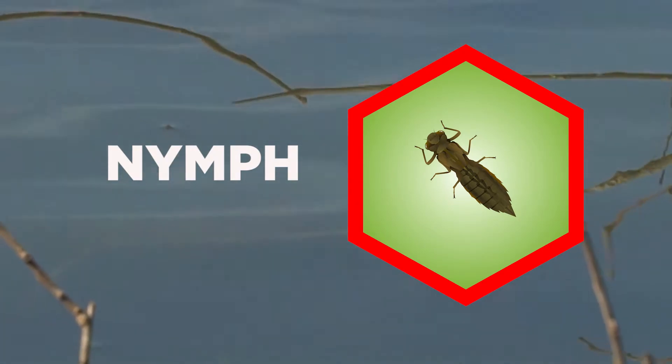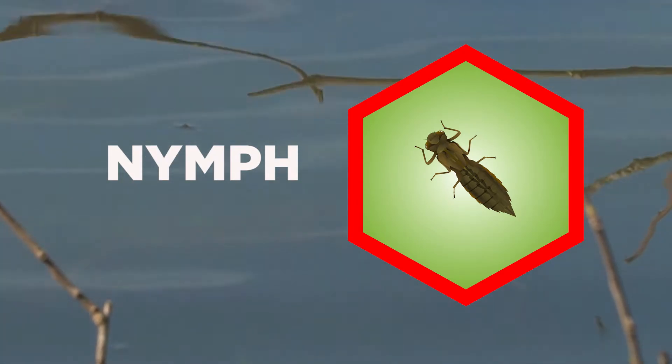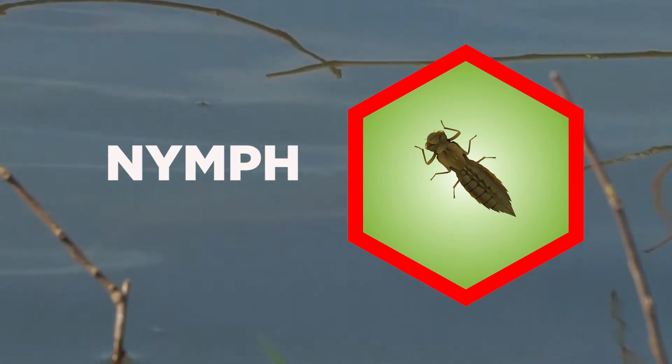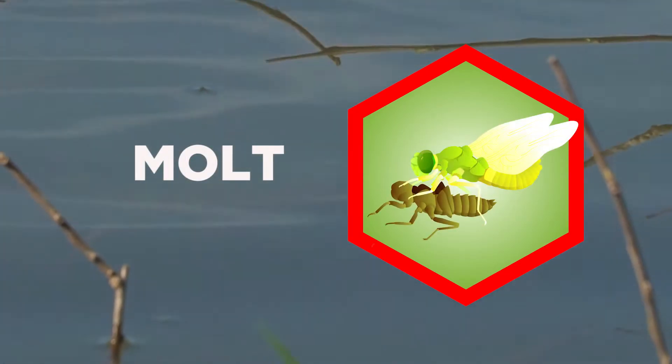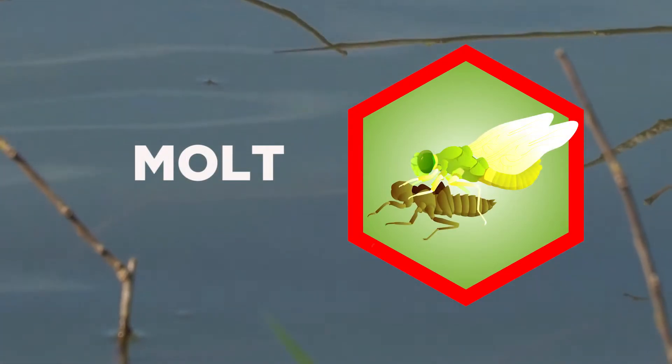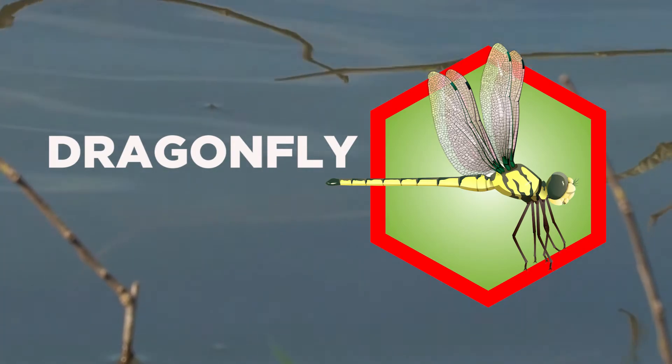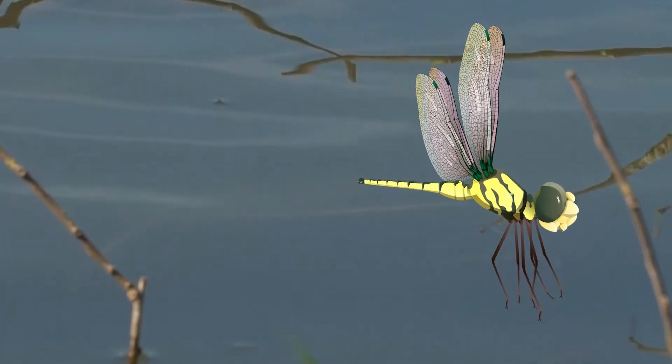It lives in the water, will eat things in the water, and eventually shed its exoskeleton and a dragonfly will emerge. The dragonfly is then able to fly off to hunt other insects.